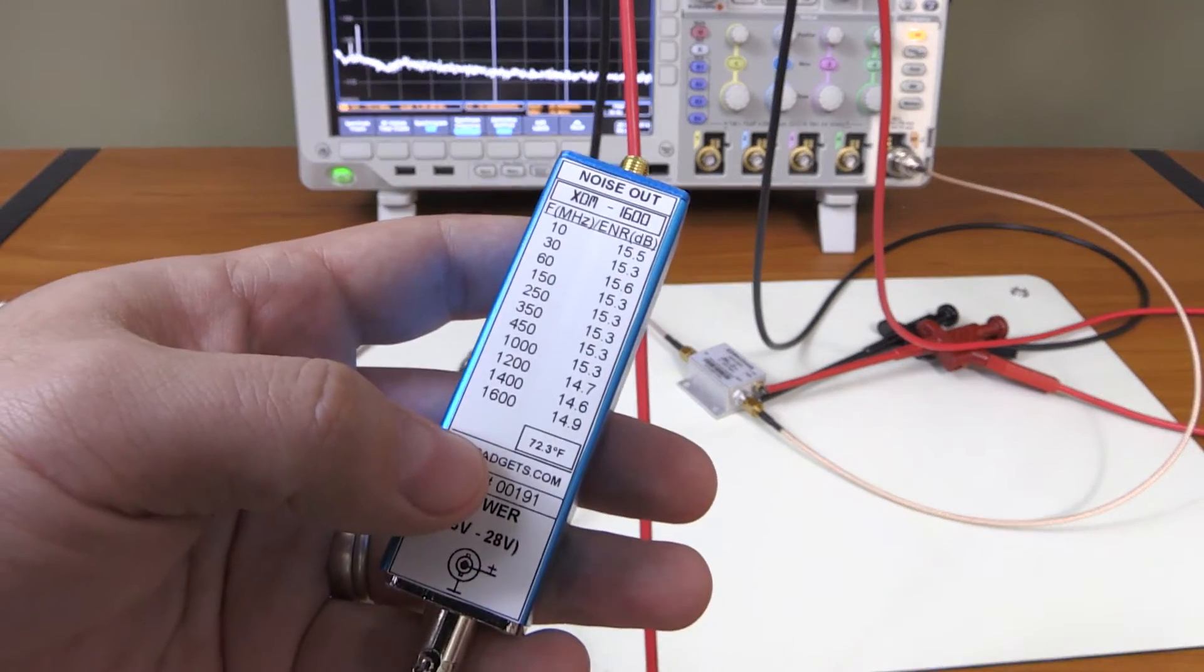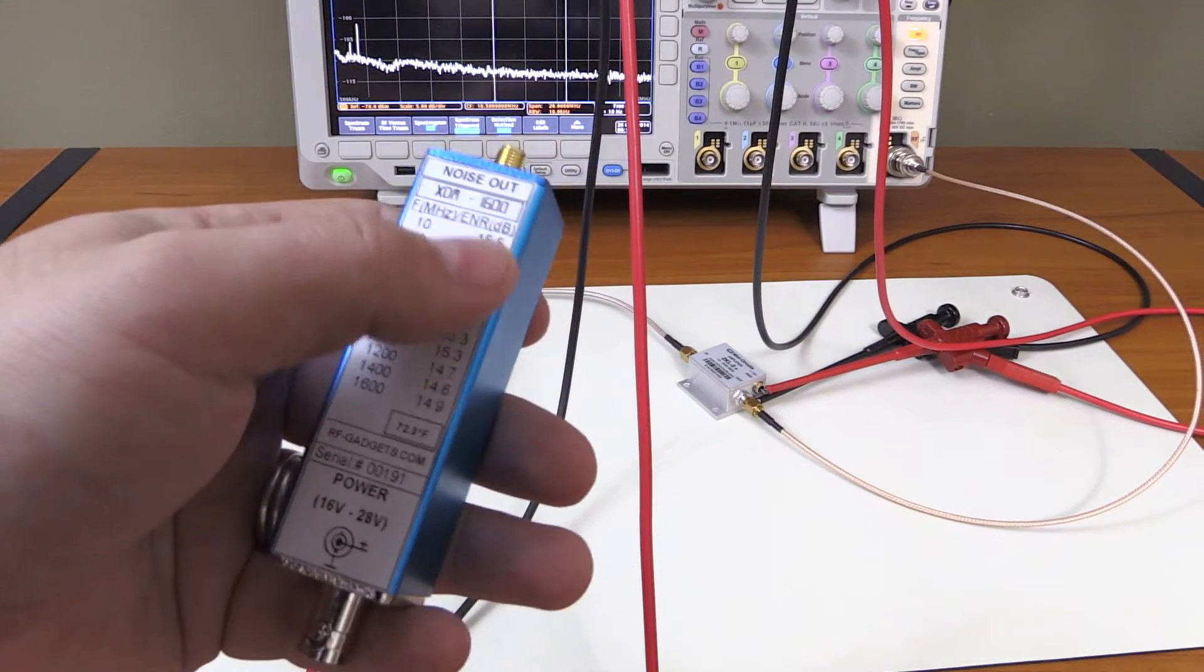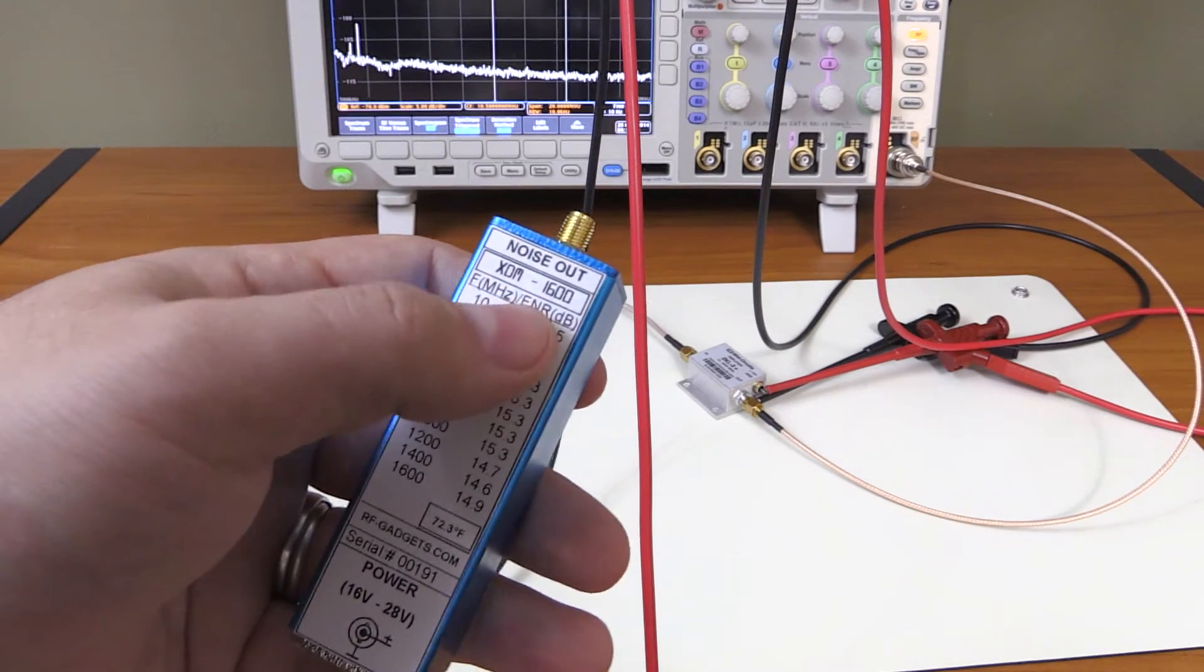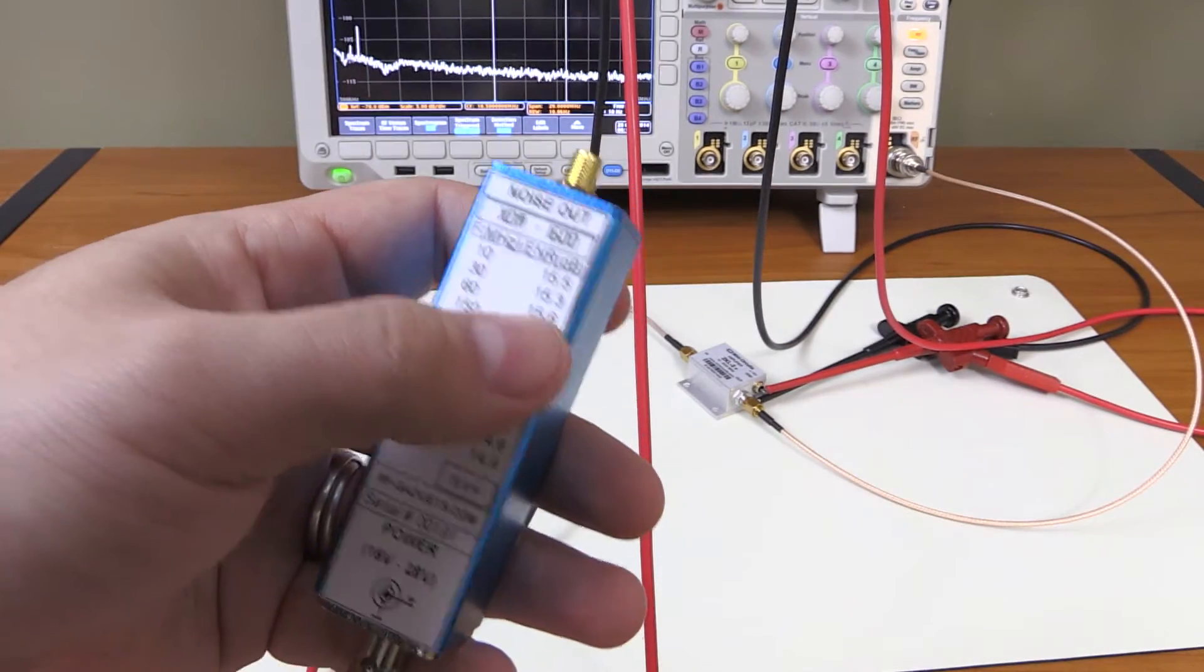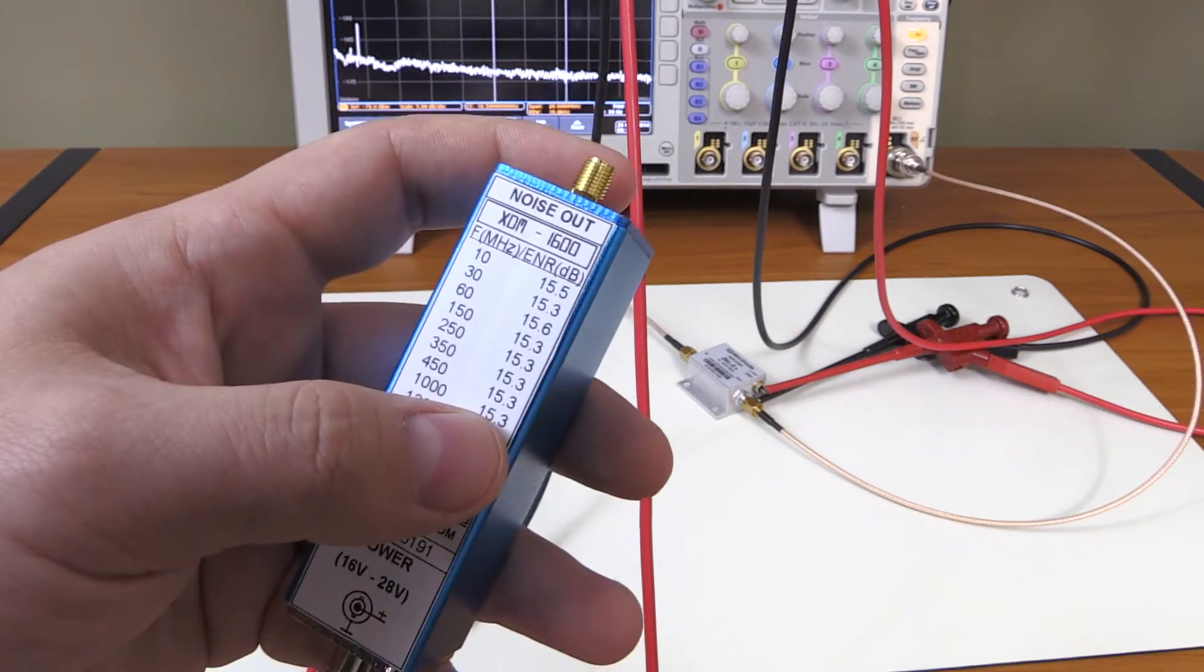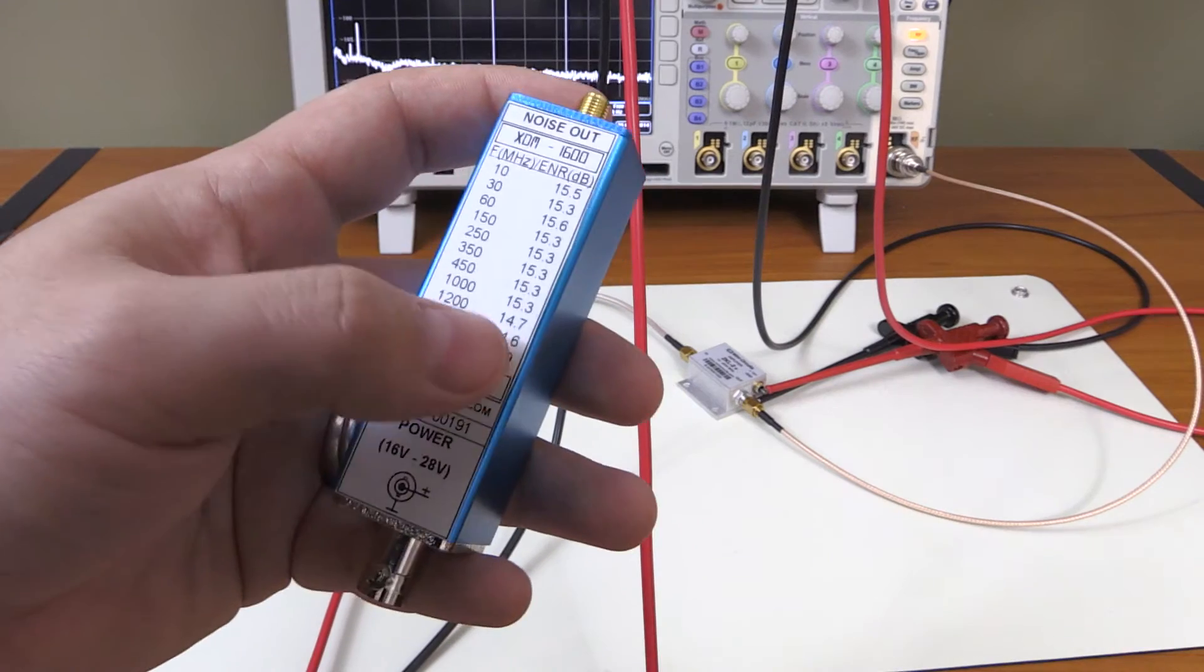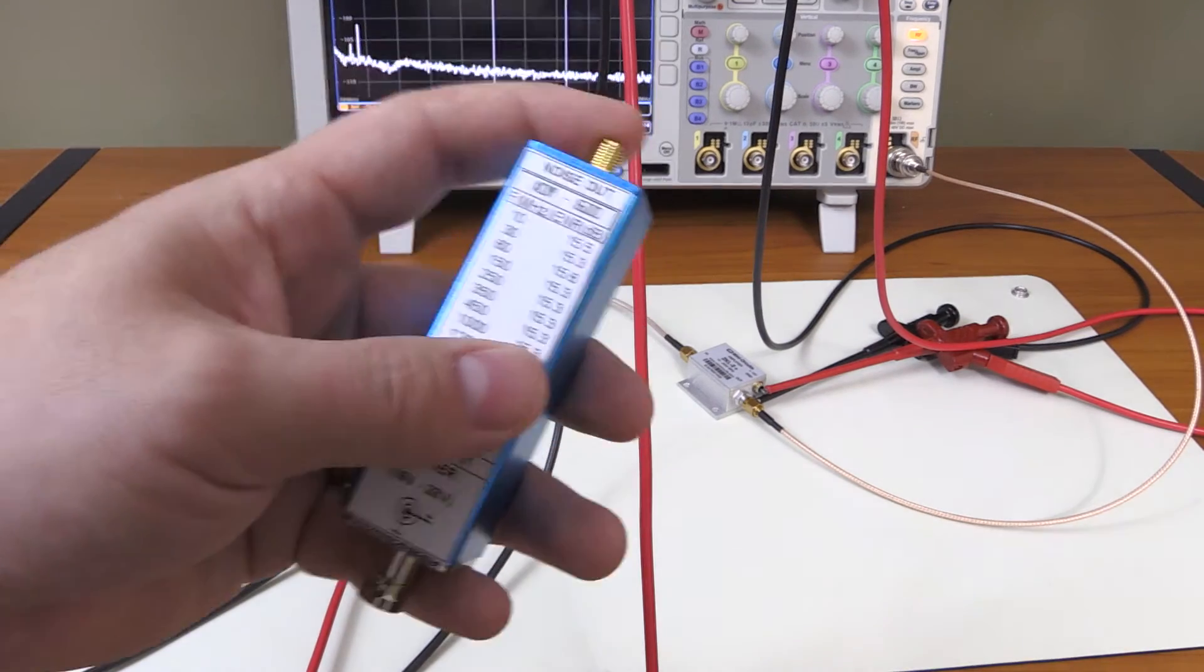Any noise source is going to be temperature dependent. And we see the frequency range is from 10 megahertz to 1,600 megahertz. And over here is our noise. It's in dB. And it's given as ENR, which is very typical for noise sources. ENR stands for Excess Noise Ratio. What this number tells us is how far the noise that comes out of this SMA connector is above the natural thermal noise. Thermal noise being Johnson-Nyquist noise. I've mentioned it briefly in my previous video on the noise figure measurement.